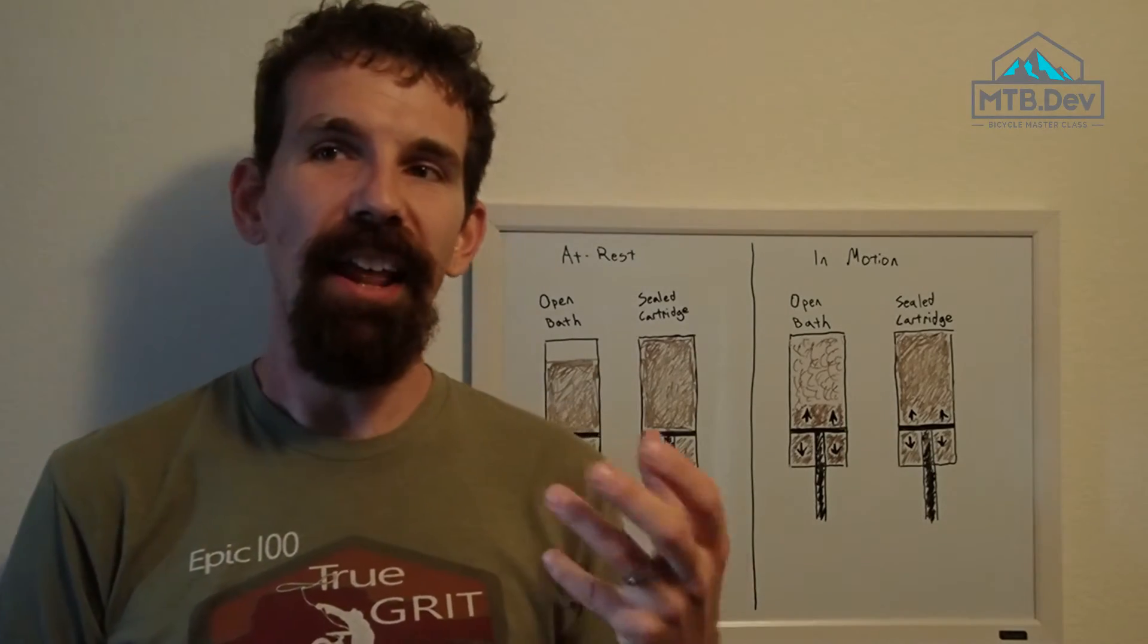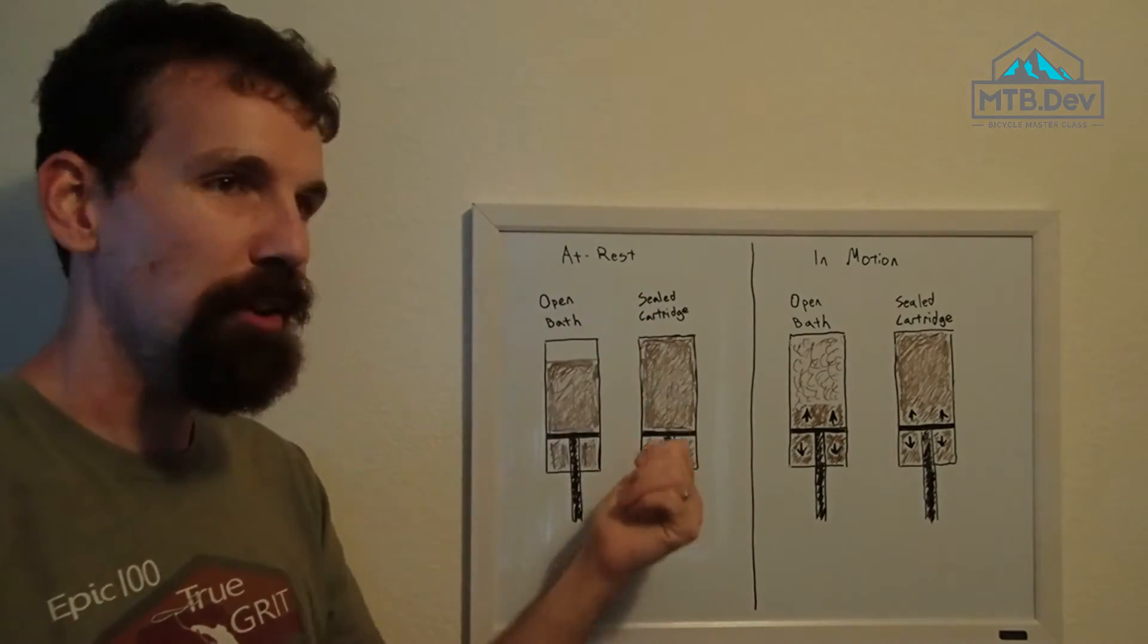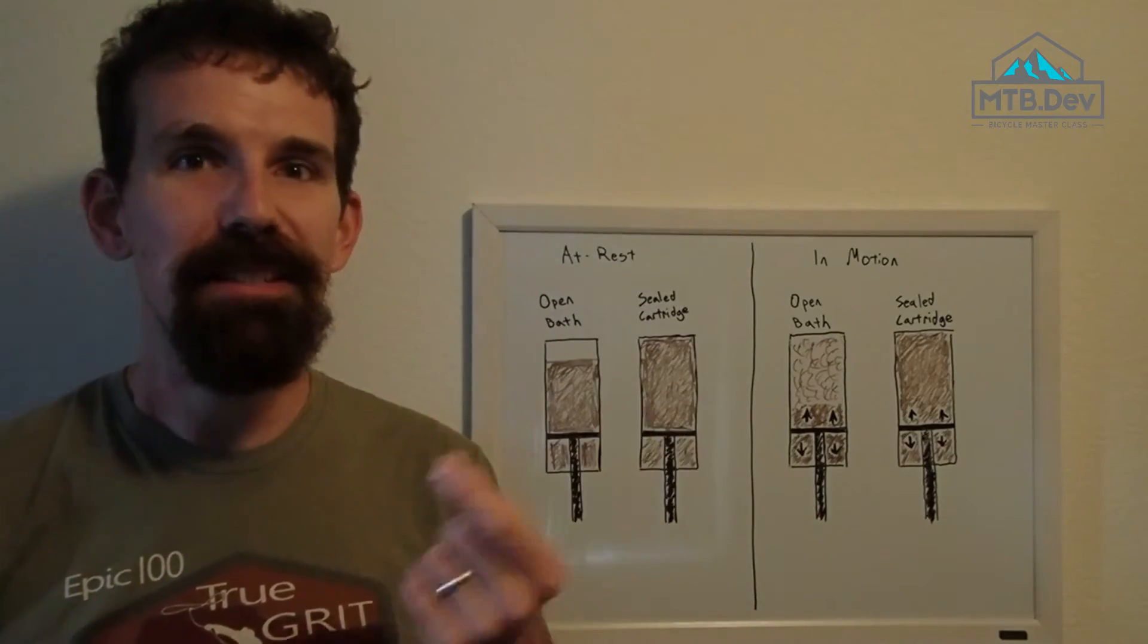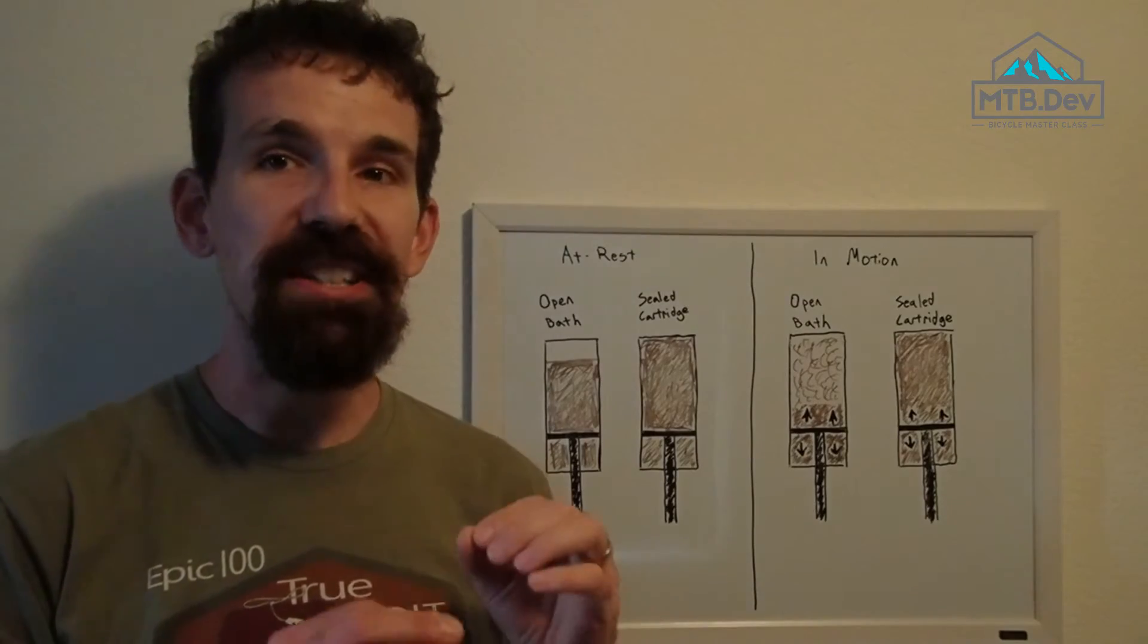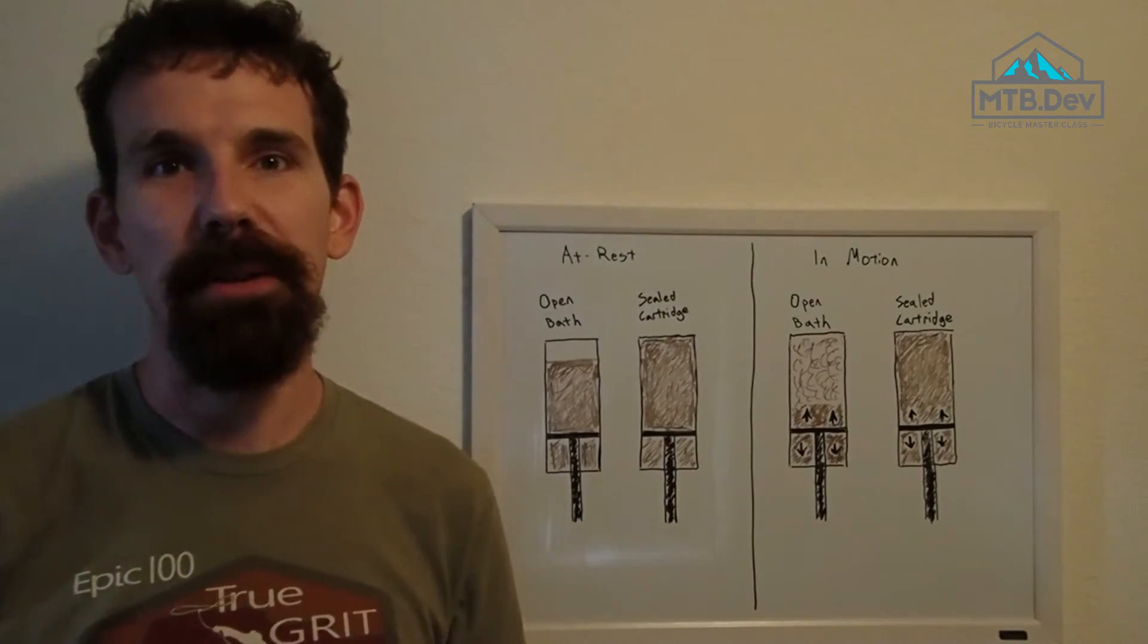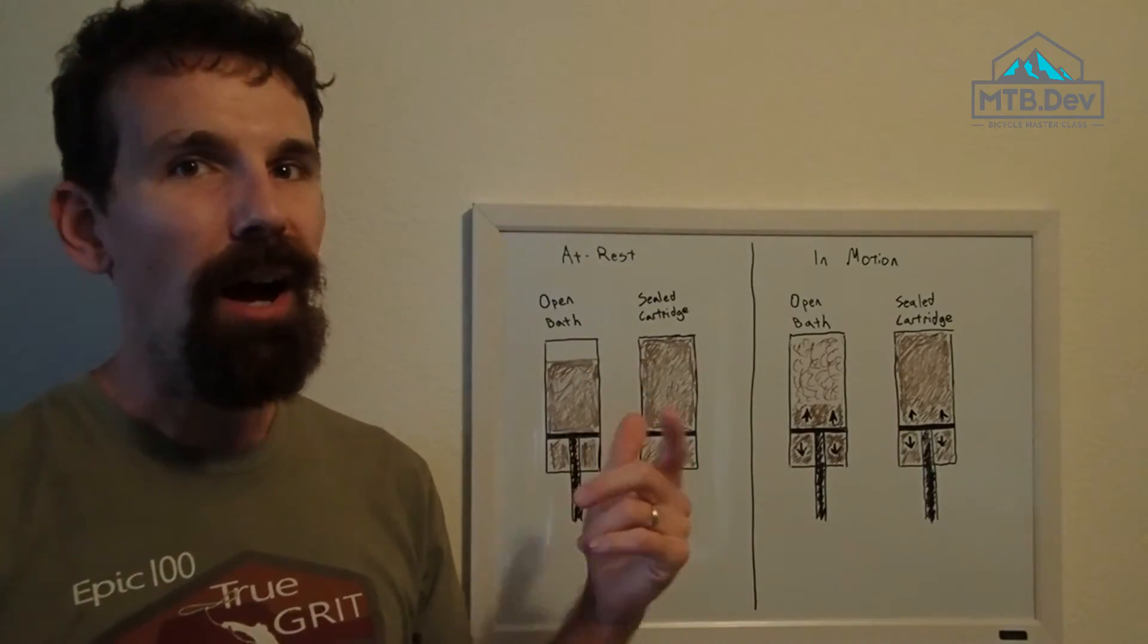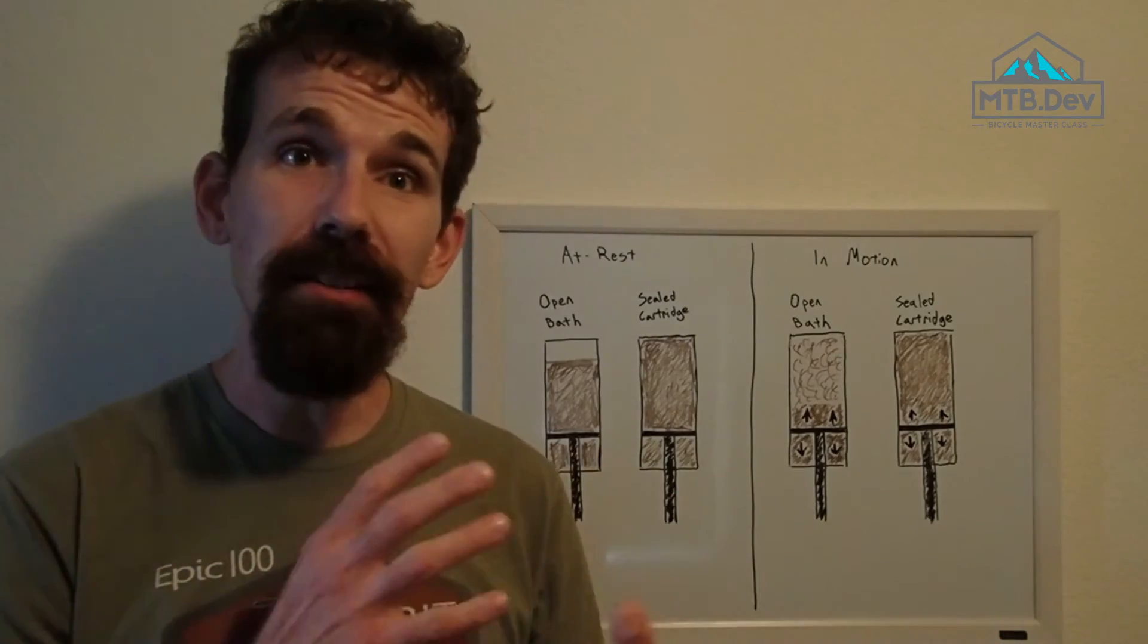Sealed dampers prevent air from mixing with the oil by using a damper body that's completely filled with the damping fluid. These are more sophisticated, expensive, and more difficult to maintain than the open bath dampers, but they offer more consistent and articulate performance. This is where you typically see separate high and low speed damping for the compression and even the rebound.